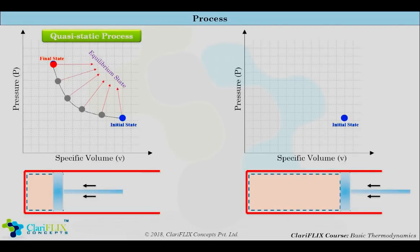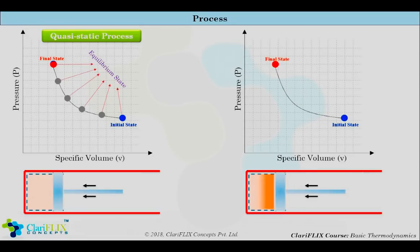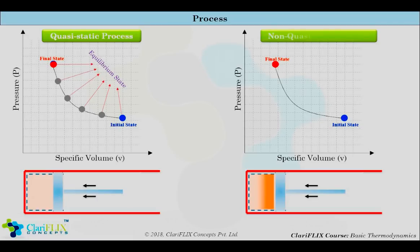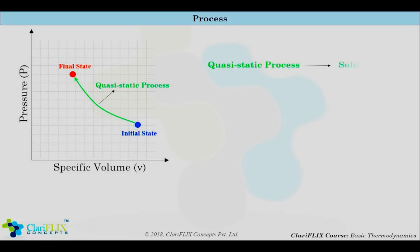Now consider pushing the piston very fast. Because of the fast movement of the piston, the pressure distribution will be uneven within the system. Molecules close to the piston will experience more pressure compared to those far away. Because of this uneven pressure distribution, the system will never attain mechanical equilibrium, and therefore will never have thermodynamic equilibrium. This kind of very fast process with no equilibrium states in between is called a non-quasi-static process. By convention, quasi-static processes are denoted by a solid line and non-quasi-static processes by dotted lines on chart diagrams.